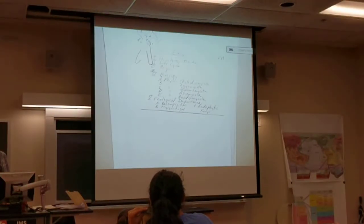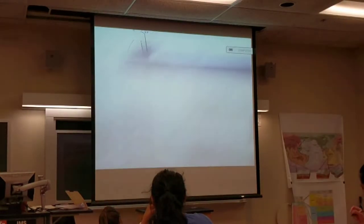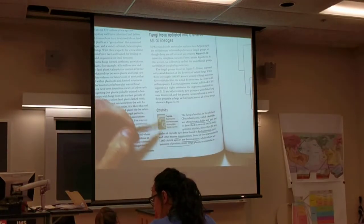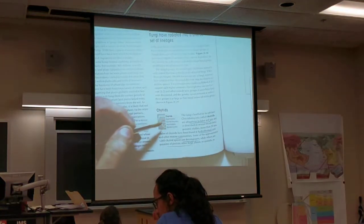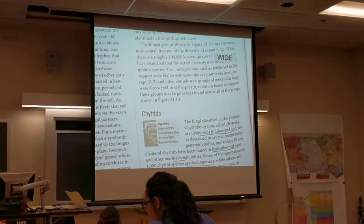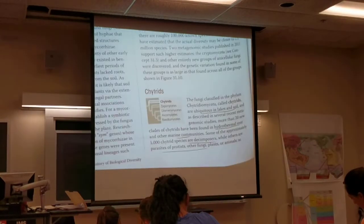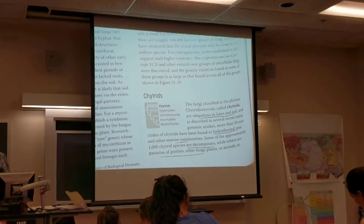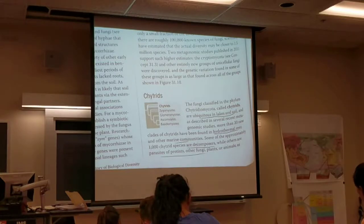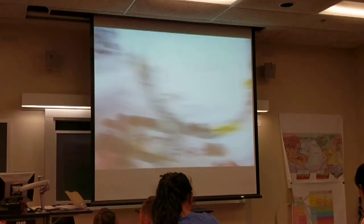Back to the Chytridiomycota. Their book introduces each group by reminding us of their place on the phylogeny. Chytrids are found in many different places — in lakes, in soil, in hydrothermal vents, and other oceanic communities. Many are decomposers, others are parasites of a variety of organisms.